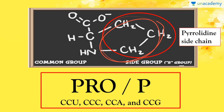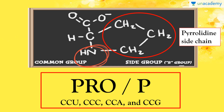The primary amine on the alpha carbon is glutamate semi-aldehyde. The primary amino group attached to this carbon is a glutamate semi-aldehyde, and this is how it differs from any other amino acid.